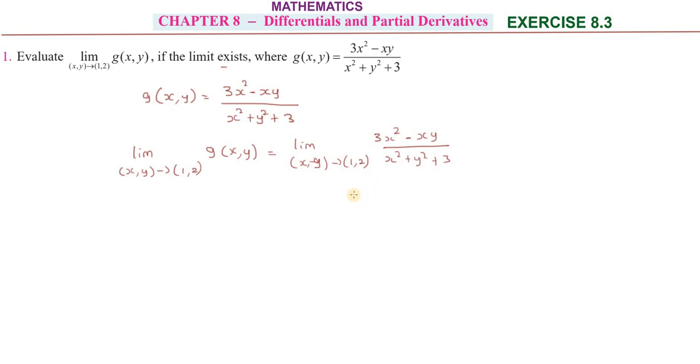So x equals 1, y equals 2. This gives 3(1)² - 1·2 divided by 1² + 2² + 3.